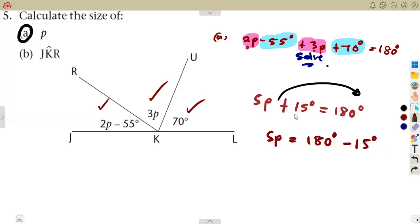So 5p is going to be the difference, which is 165 degrees. If you subtract these two, you're going to obtain 165. Divide by 5.